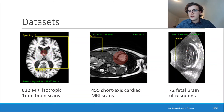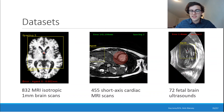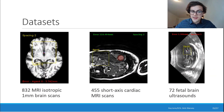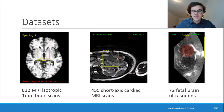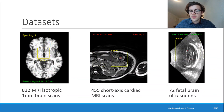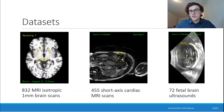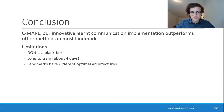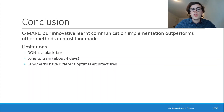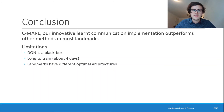We've evaluated our methods as well as the baselines we re-implemented using three datasets: brain scan MRI, cardiac MRI, and fetal brain ultrasound. What we can conclude is that our innovative learned communication implementation, CMARL, outperforms all methods in most landmarks. Some landmarks have better accuracy using previous work, but in most cases CMARL is the best.